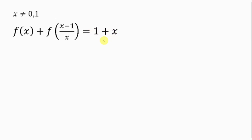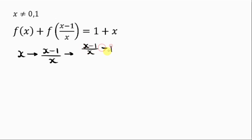I'm going to be applying a trick to solve this question. This trick will be replacing x with x minus 1 over x repeatedly. That means our first step, this x, we're going to be replacing it with x minus 1 all over x. Our next step will be replacing x with x minus 1 over x, minus 1 all over x minus 1 all over x.